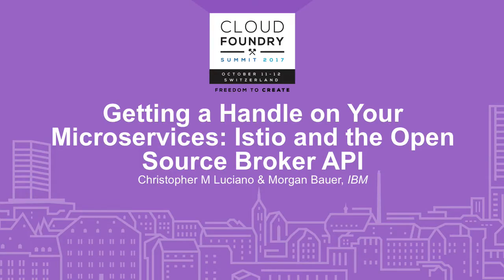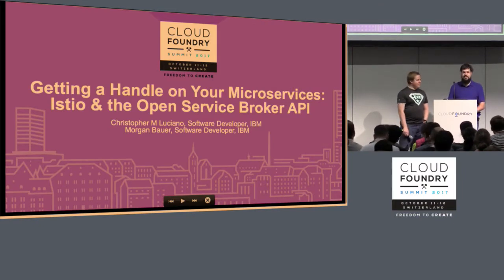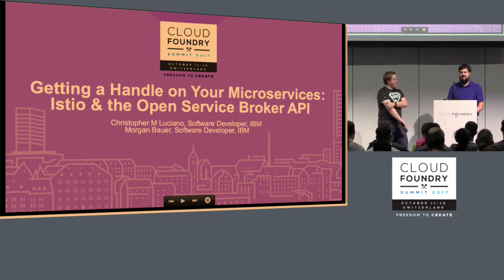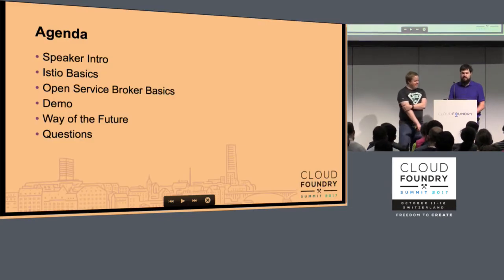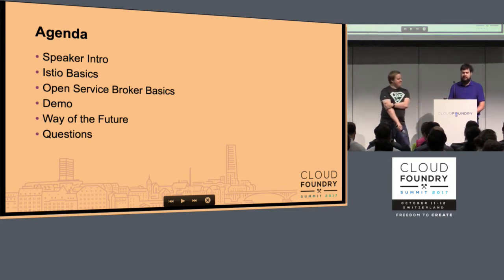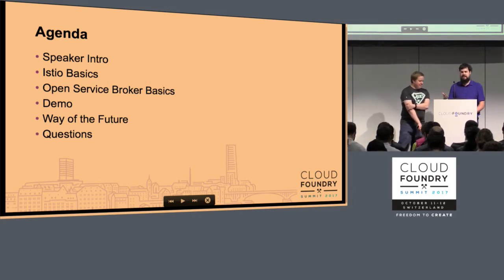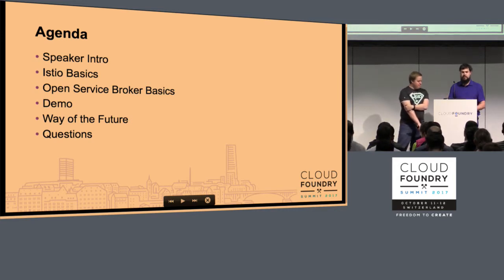All right. Sorry for the delay, we'll get started here. This is a demonstration of Istio and the Open Service Broker API. I may have said open source on the website, and that's because I had a typo. Some things we're going to talk about: generally about us, a few Istio basics, the Open Service Broker basics, a live demo, and ways we want to enhance this demo and collaborate with the Istio community as well as Cloud Foundry to open up the scope of it.